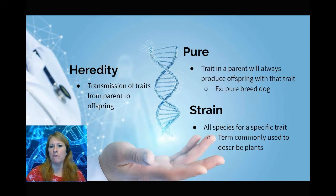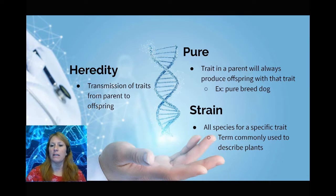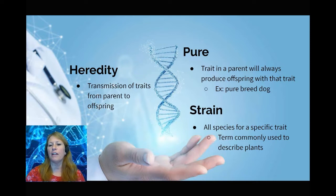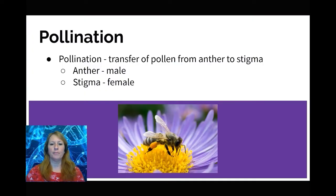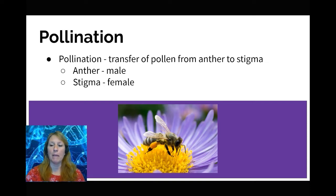A few more terms: heredity is the passing of traits from parent to offspring. Pure or purebred means all of the offspring are identical in traits to the parents — it's not carrying any recessive alleles. Strain is the same concept used specifically in plants, whereas purebred is used more in animals like a purebred dog. Pollination is when you transfer pollen from the anther — the male reproductive organ of a plant — to the stigma.